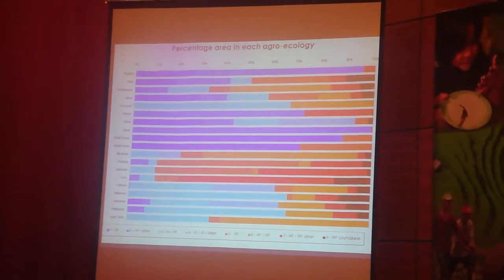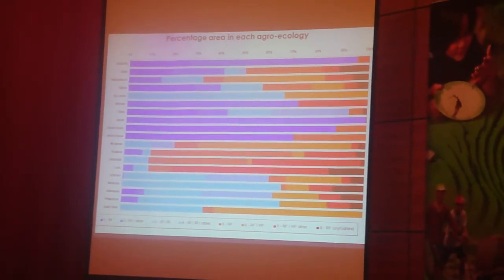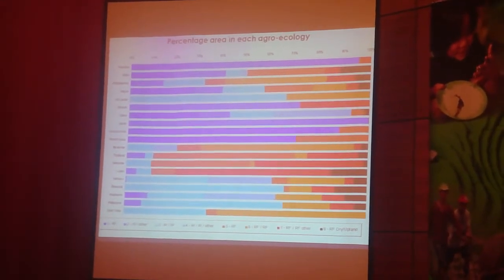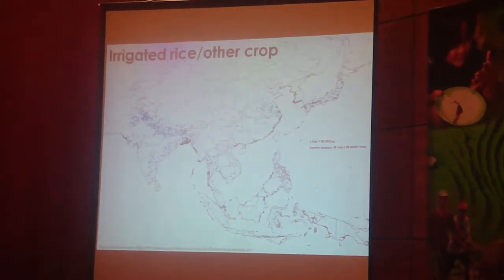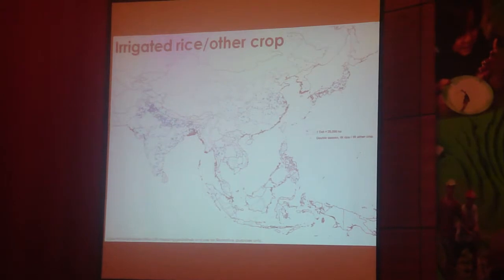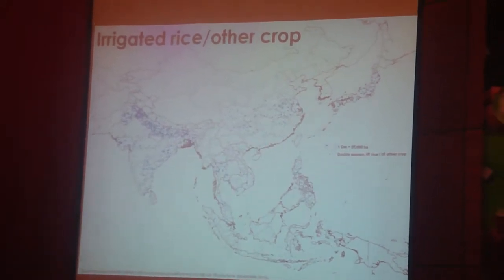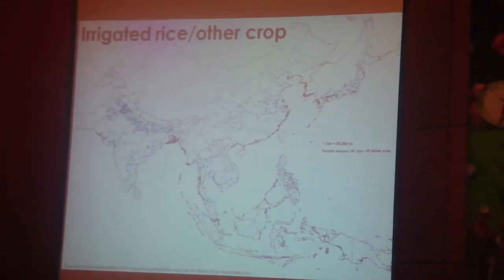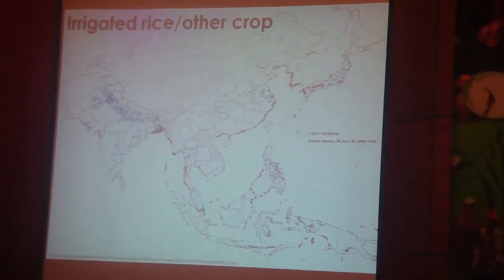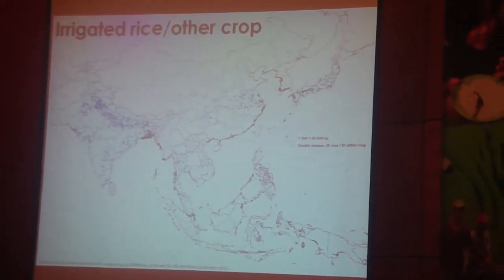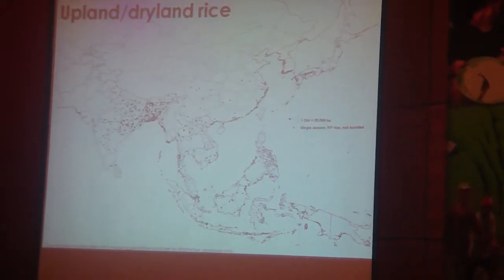Of course, we can break this down further to the country level, and this is one of the reasons why I'm really keen to disseminate this presentation — we would really like to get feedback on how we can improve these figures. We can also disaggregate this down to our zones. For example, the irrigated rice other system: each point represents about 25,000 hectares, and you can quite clearly see the rice-wheat areas in the IGP and across China. Another example would be the upland or dryland rice system, showing very different distributions. This is what we're trying to pull together in this analysis.